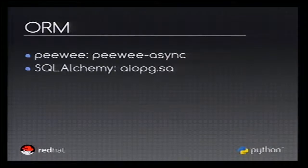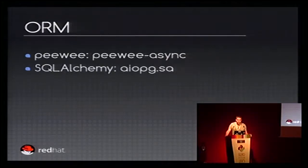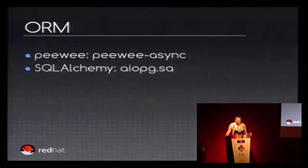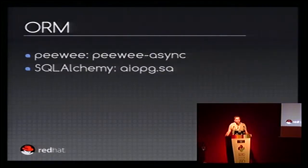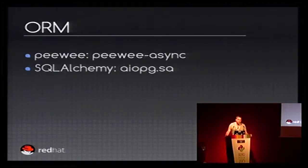If you don't want to write SQL queries directly, you can use an ORM like PeeWee. PeeWee has a wrapper called peewee-async, which is an AsyncIO layer on top of PeeWee for an asynchronous API. And for SQLAlchemy, you have aiopg.sa, which is not the full API — it only implements a part of the API. Especially, you don't have the lazy loader.